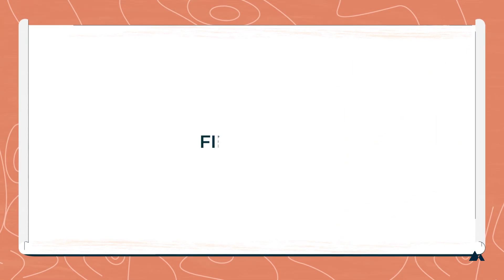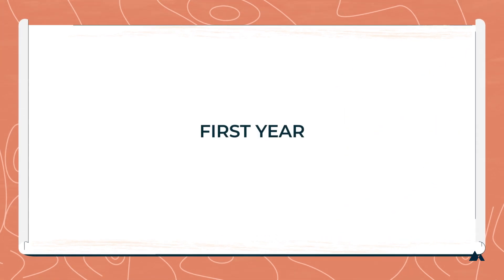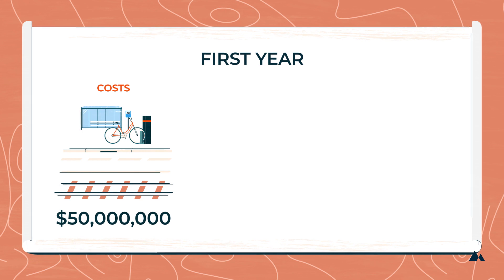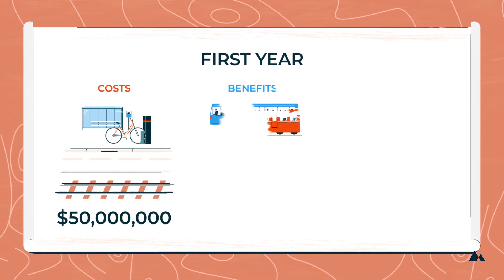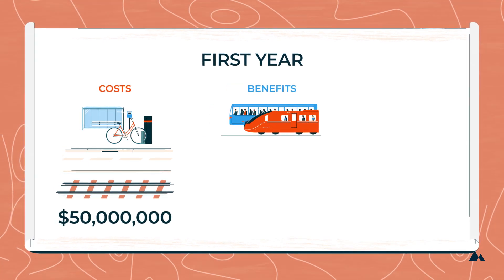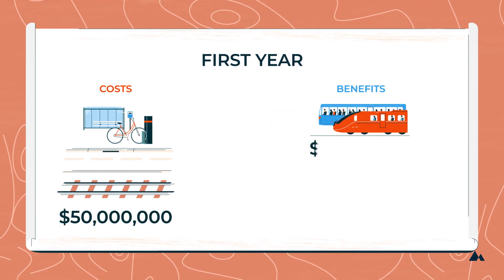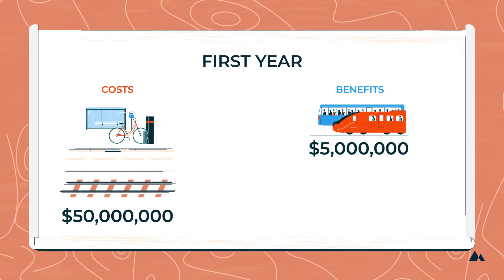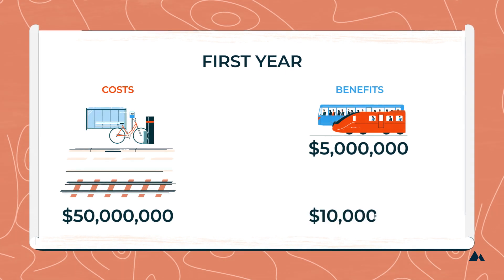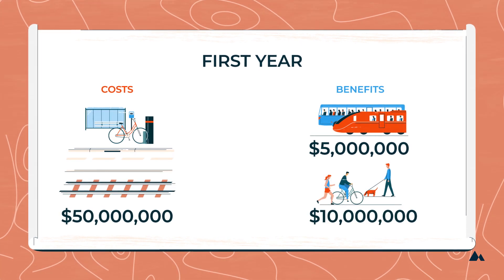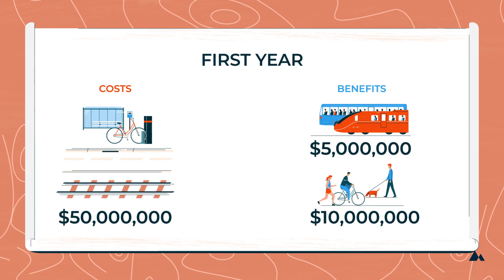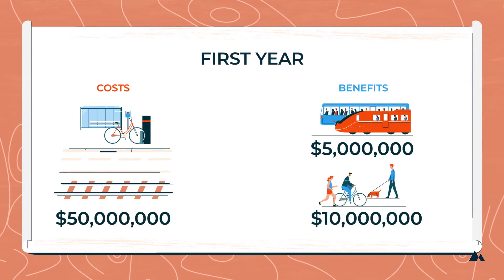The total infrastructure costs in the first year are estimated to be $50 million. The benefits in the first year are estimated to include $5 million in revenue from increased ridership and $10 million in health benefits from decreased local air pollution and increased walking.